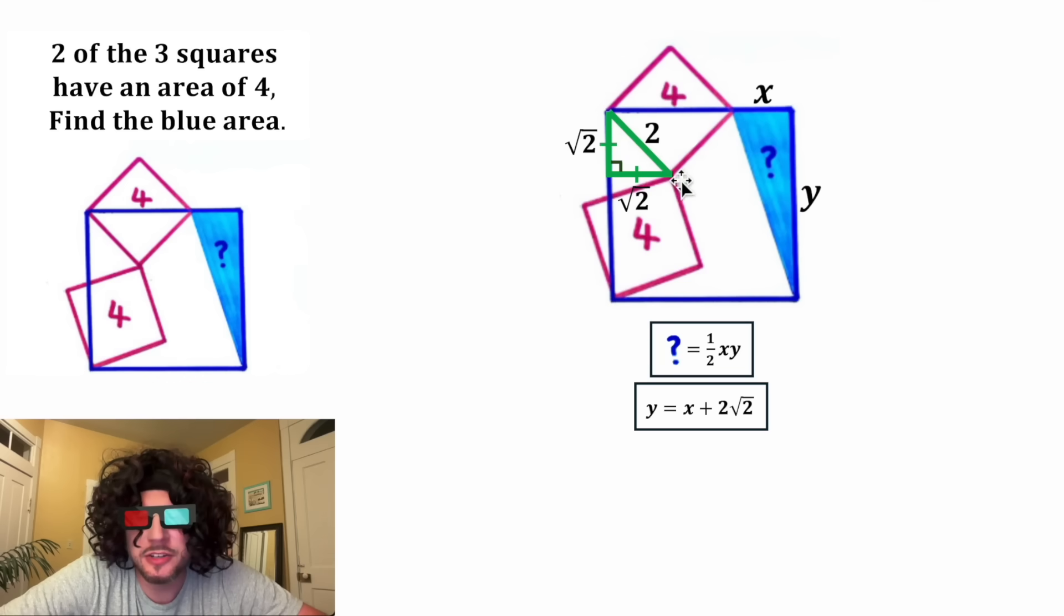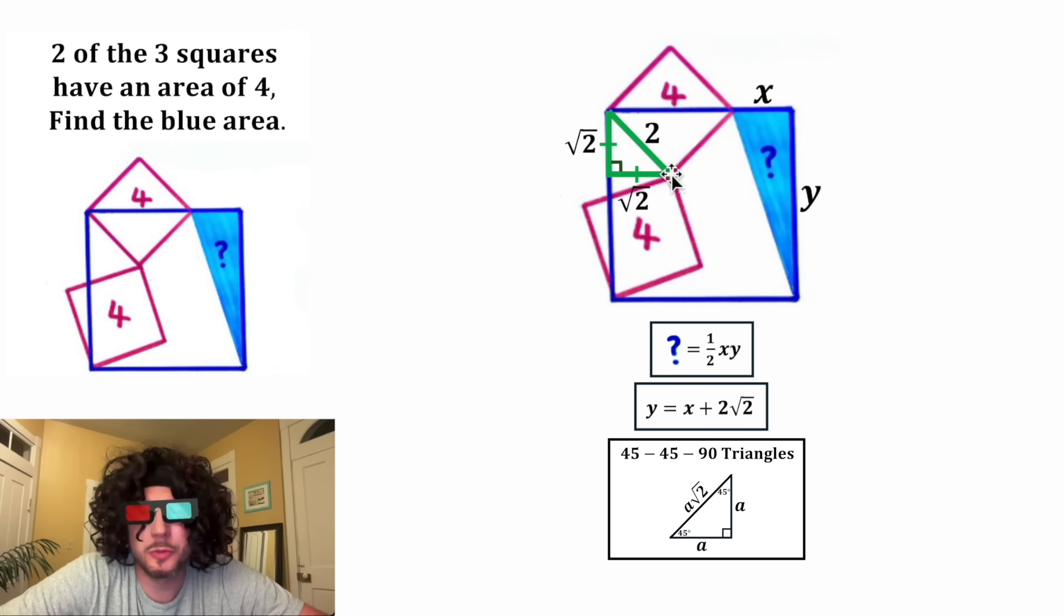Another way you can think of it is this hypotenuse of this triangle is the side length of the pink square. So it's equal to two. And this hypotenuse needs to be square root of two times the length of these legs. So if the legs are square root of two, the hypotenuse would equal two.